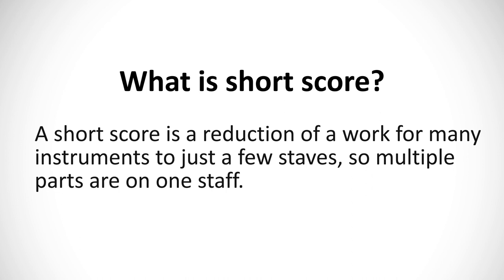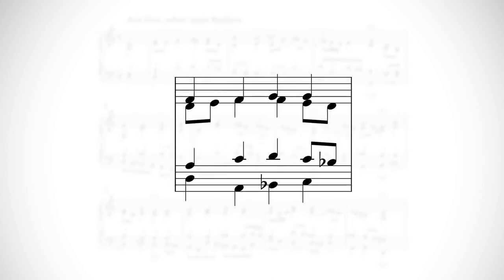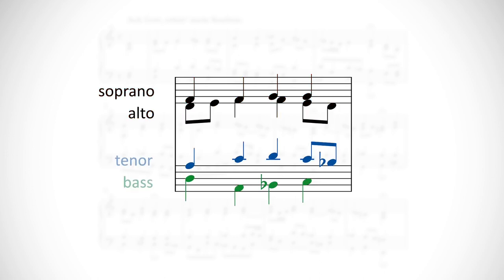An opera, for instance, may be written first in a short score, then in full score, then reduced to a vocal score for rehearsals. In choral music, like the type we're going to look at in this lesson, a short score usually has the sopranos and altos sharing the top staff, and the tenors and basses sharing the bottom staff. The voices are differentiated using stem direction: sopranos and tenors will have stems going up, while altos and basses will have their stems going down.